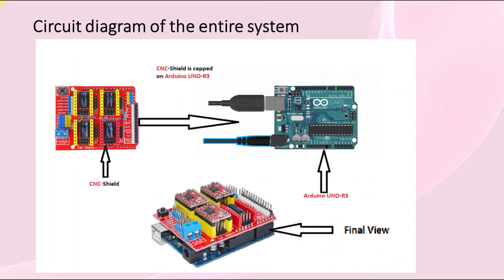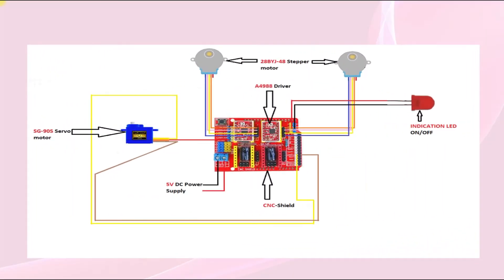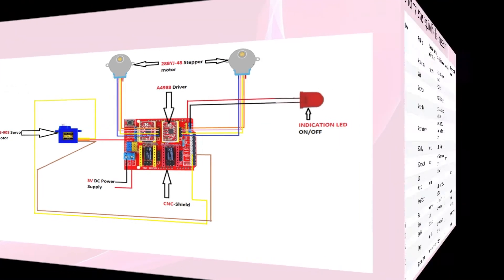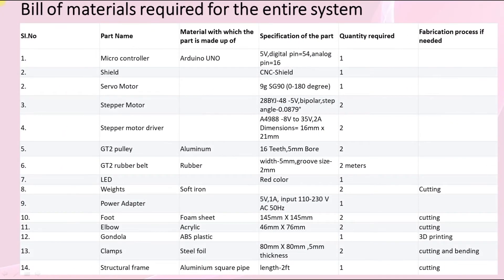Next we move on to circuit diagram of the entire system. We have used a CNC shield which is capped on Arduino Uno R3 and it is supplied with 5 volt DC. And the stepper motor, servo motor, and the indication unit are attached to the CNC shield itself.